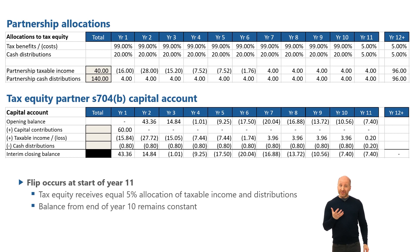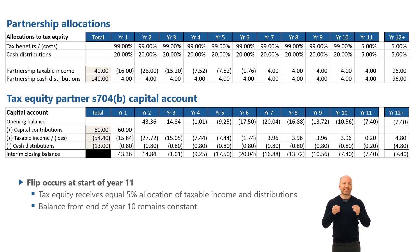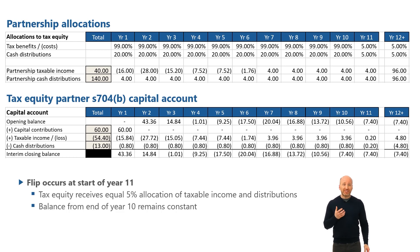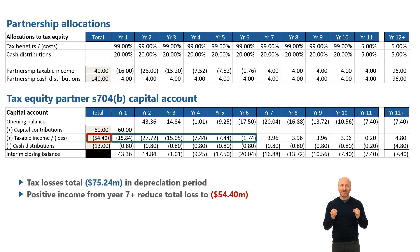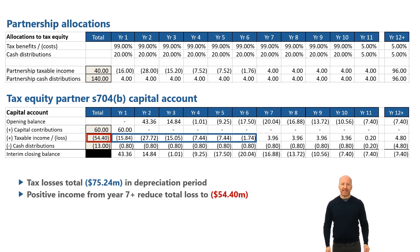As a reminder, the line item with the single greatest responsibility for the 704B tax capital account going negative is tax losses. In the first six years, the losses were equal to $75.24 million before going positive to a total of $54.4 million. So tax losses are the single biggest driver of the negative balance of the tax capital account.